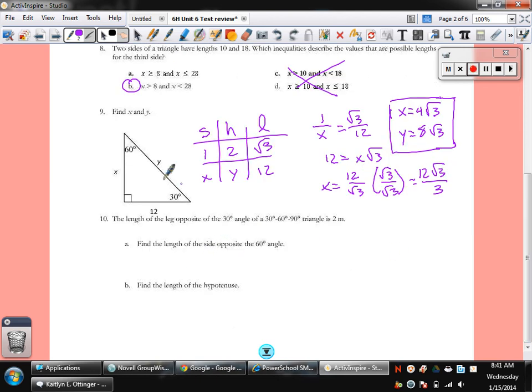The length of the leg opposite the 30 of a 30, 60, 90 is 2. So again, I'm going to set up my information. SHL, 1, 2, square root of 3. That's 2. Find the length of the side opposite the 60. We'll call that one X. And find the hypotenuse. That's Y. So 1 over 2 equals the square root of 3 over X. That's a 2. And we get X equals 2 times the square root of 3. The hypotenuse is just double the short side, so that's 4. Easy enough.